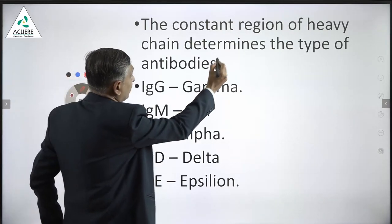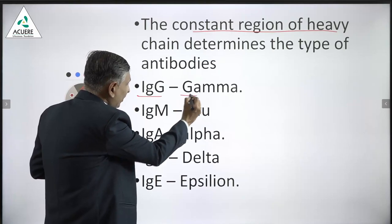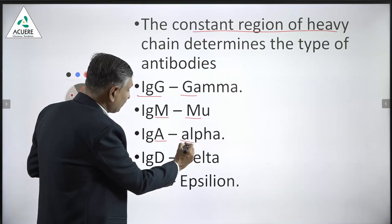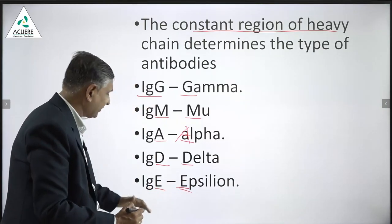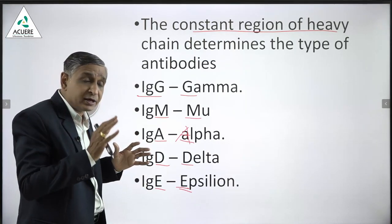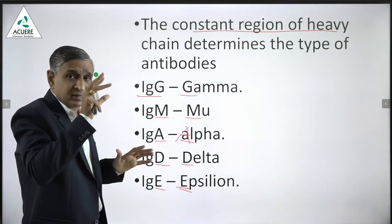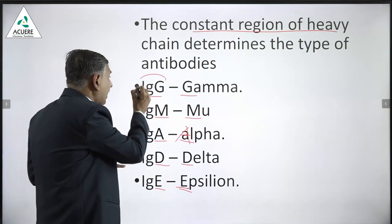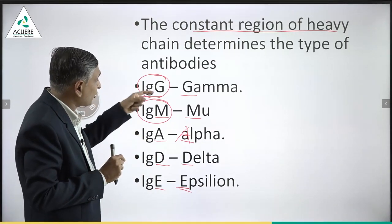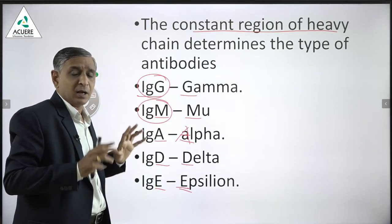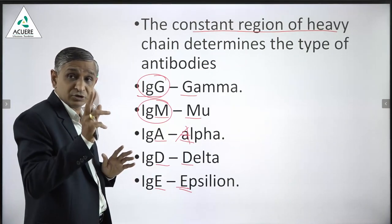The constant region of the antibody determines its type. IgG stands for gamma, IgM stands for mu, IgA stands for alpha, IgD stands for delta, and IgE stands for epsilon — these are the 5 types of antibodies. These 5 types are due to changes in the constant region of the heavy chain; all IgG will have the same heavy chain constant region, different from IgM.